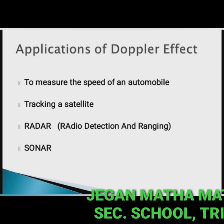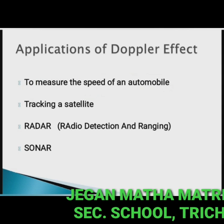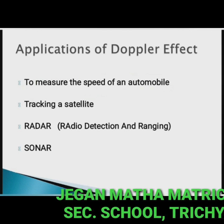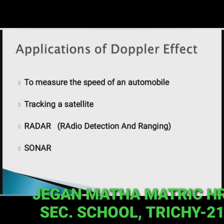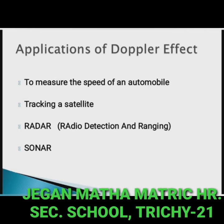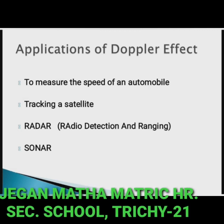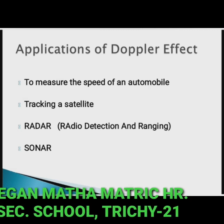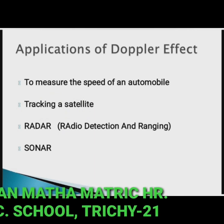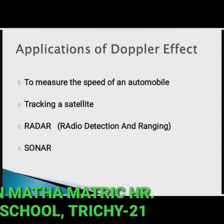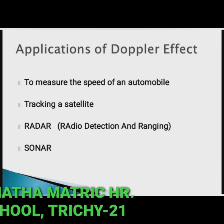Applications of the Doppler effect: First, to measure the speed of an automobile — an electromagnetic wave is emitted by a source attached to a police car and reflected by a moving vehicle, which acts as a moving source. From the frequency shift, the speed of the car can be determined, helping to track over-speeding vehicles. Second, tracking a satellite — the frequency of radio waves emitted by a satellite decreases as it passes away from the Earth, and by measuring the change in frequency, the location of the satellite is determined.